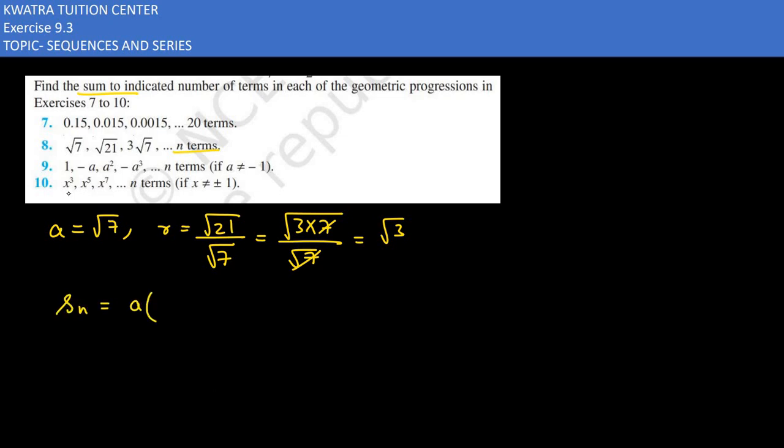A then r, you can see root 3, root 3. What is r is greater than 1, so you have value rn minus 1, r minus 1.